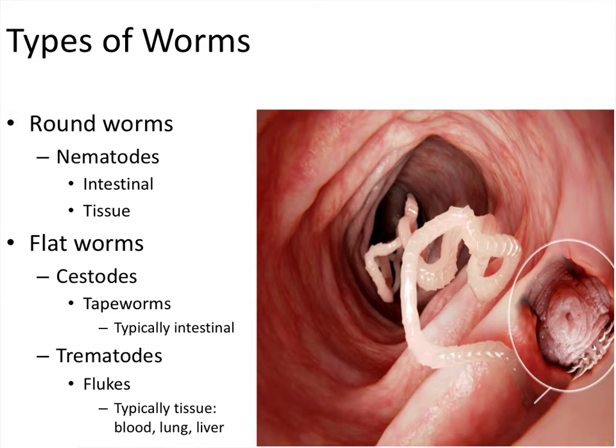There are also the trematodes. These are called flukes, and we'll talk about flukes at the end of this lecture. Basically, these are flat, usually kind of oval-shaped organisms that primarily infect tissues like blood, lung, and liver.